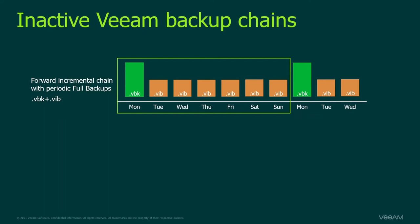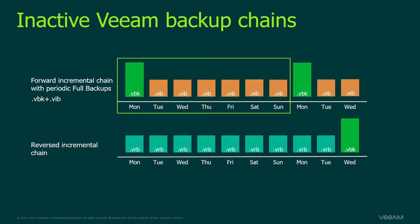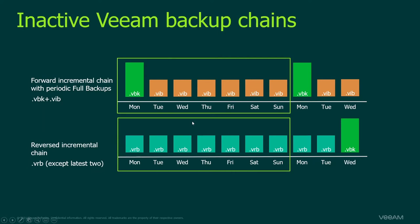If you are using a reverse incremental backup — where the latest backup is always a full backup file — we only move the oldest backup files except the latest two. This is because when creating a new full backup file we need to transform all existing data into a reverse backup, requiring all those blocks on the performance tier. Reading them from the capacity tier would take time and incur transaction costs.